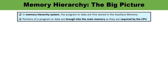To start with, let me give you a brief about the memory hierarchy. Though I have discussed it in the previous video in detail, in the memory hierarchy system, programs and data are initially stored in the auxiliary memory. From this memory, the portion of program or data which is required by the CPU is brought into the main memory.